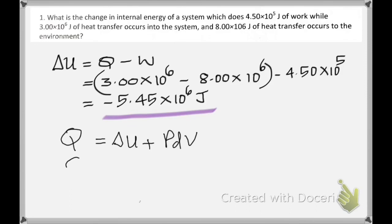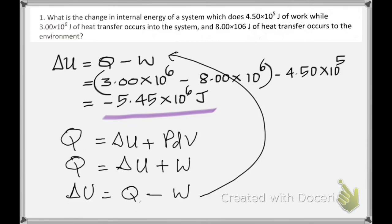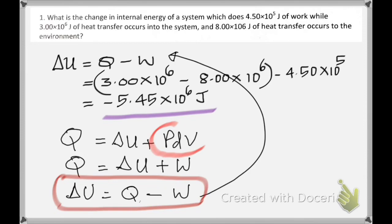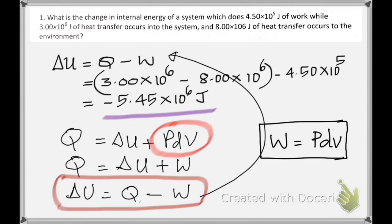Work done is given by the formula W = P × ΔV (pressure times change in volume). When the piston moves up as the gas expands, the pressure is constant until pressures equalize. So you take that constant pressure multiplied by the change in volume to get the work done.